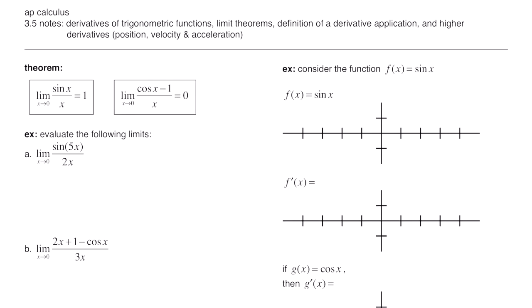The example says to evaluate the following limits. Part A says the limit as x goes to 0 of sine of 5x over 2x. With the sine here, we're going to use the first theorem. In order to use this theorem, it specifically needs to be the limit as x goes to 0 of sine of x over x — whatever we're taking the sine of needs to be the same in the denominator.